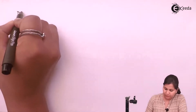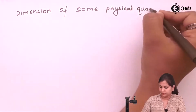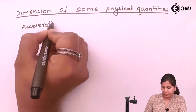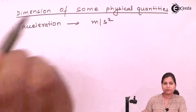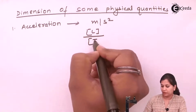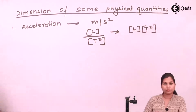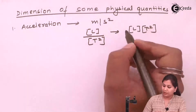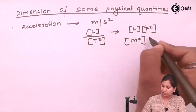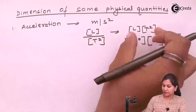Let's see some dimensions of quantities. For acceleration, its unit is meters per second squared. Meter corresponds to length [L], and second squared corresponds to time [T²]. So its dimension is [LT⁻²]. Since mass is not involved, the power of M is 0, the power of L is 1, and the power of T is minus 2.